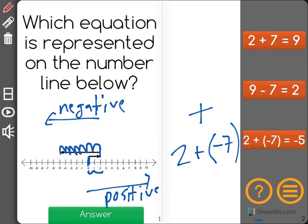So it went 2 plus negative 7 and it ended up at negative 5, showing us that that's what it is equal to, meaning that the correct answer is 2 plus negative 7 equals negative 5. We'll come back and see that. Here we go.